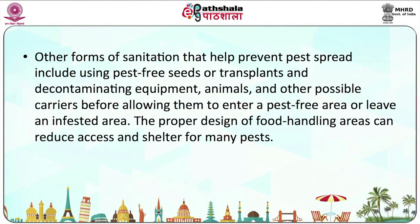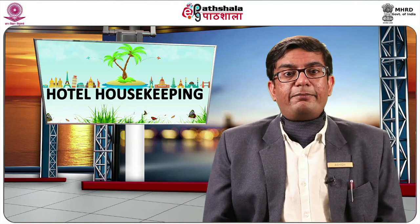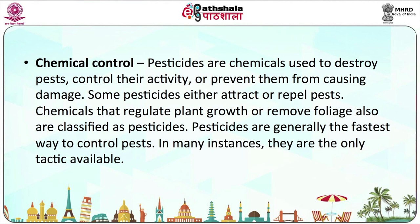Chemical control can be used both at macro as well as micro level. Pesticides are chemicals that are used to destroy pests and control their activity or prevent them from causing damage. Some pesticides either attract or repel pests. Chemicals that regulate plant growth or remove foliage are also classified as pesticides. Pesticides are generally the fastest way to control pests. In many instances, they are the only tactic available.